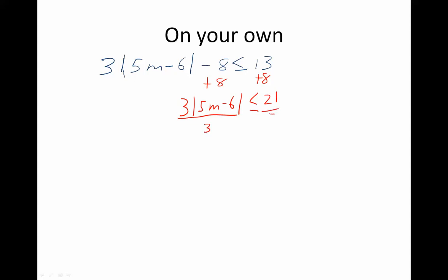Then I need to divide this by 3, and I end up with the absolute value of 5m minus 6 is less than or equal to 7. Now this is a less than AND statement, so let's turn it into a compound inequality. Remember, change the sign: negative 7 is less than or equal to 5m minus 6 is less than or equal to positive 7.